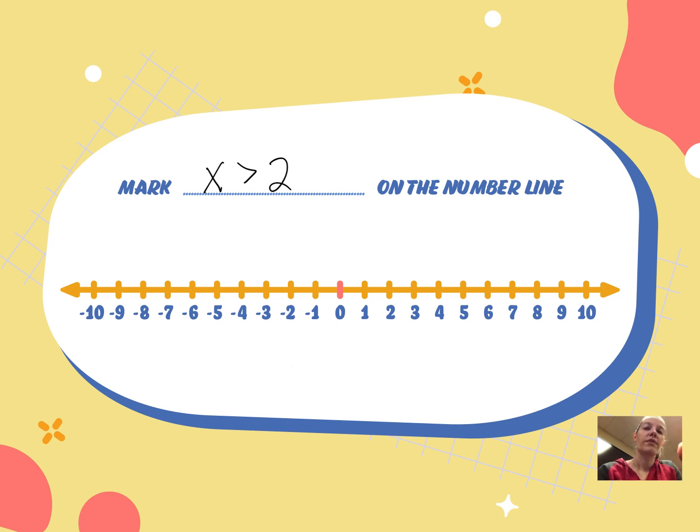So that means that I want all numbers for x that are greater than 2. It can't be equal, but greater than 2. So what numbers are greater than 2? 3 is greater than 2, so is 4 and 5 and 6 and 7, those are all greater than 2.